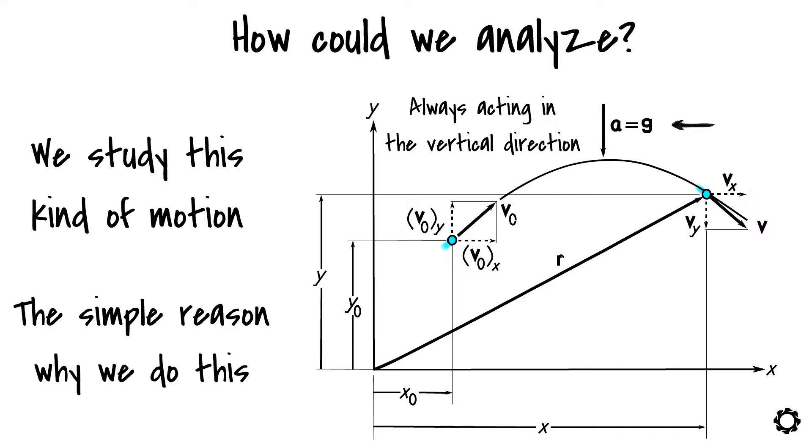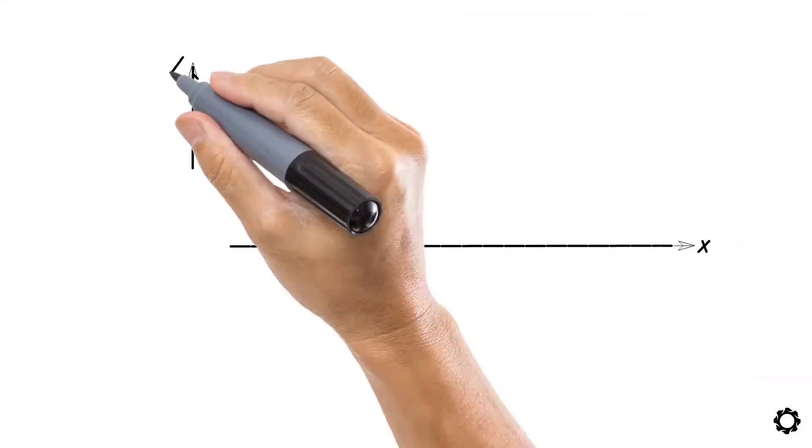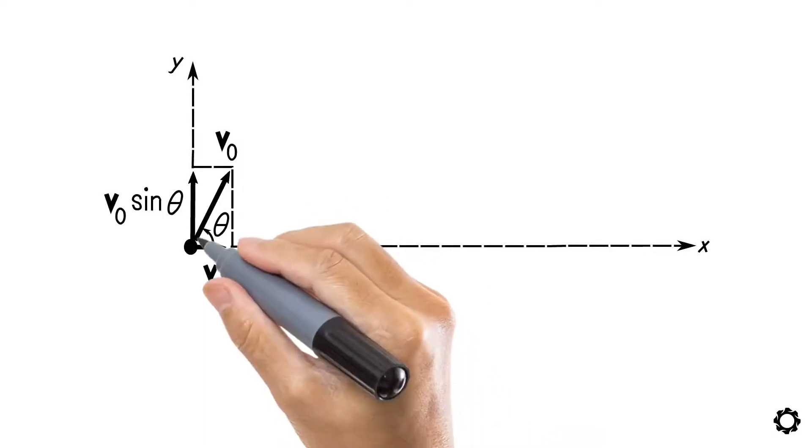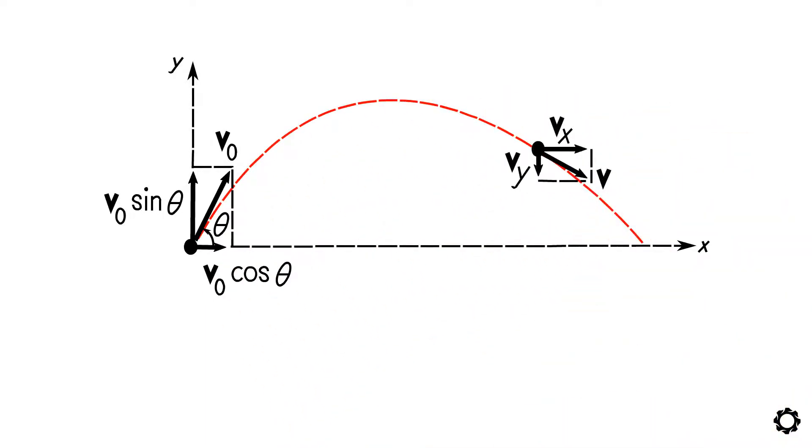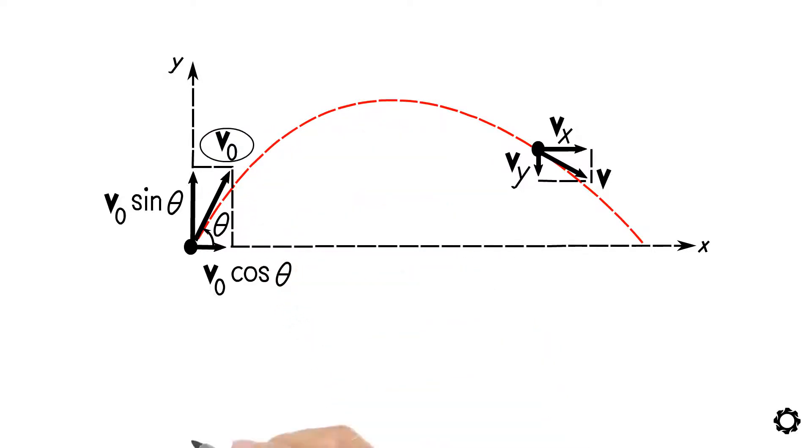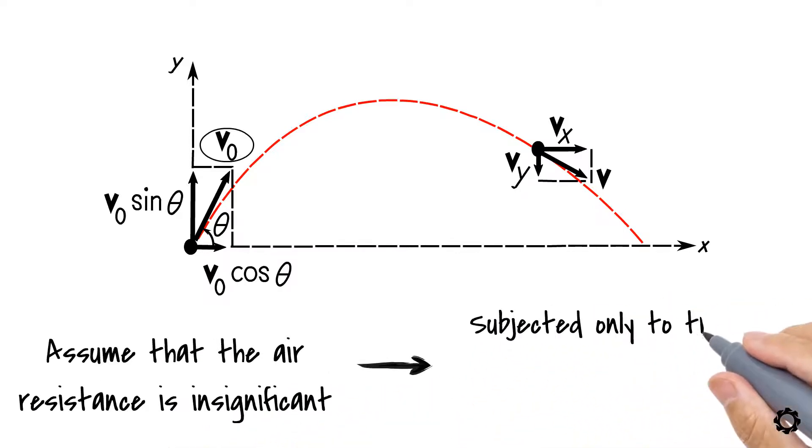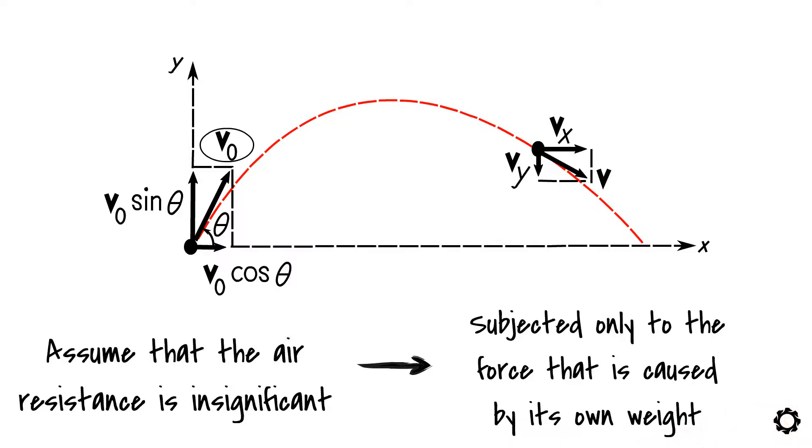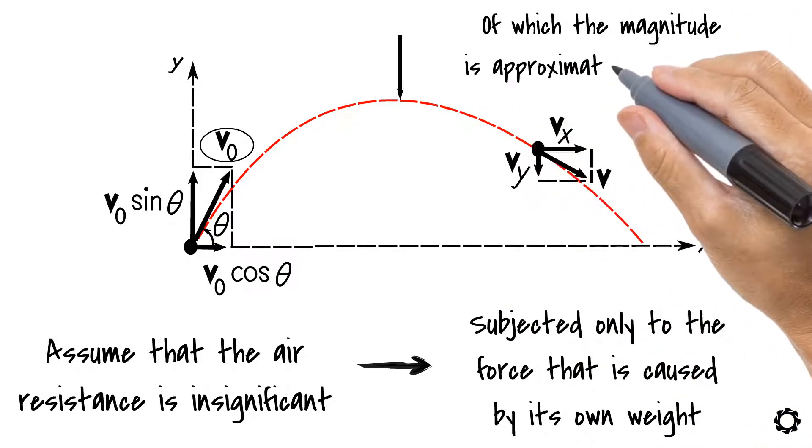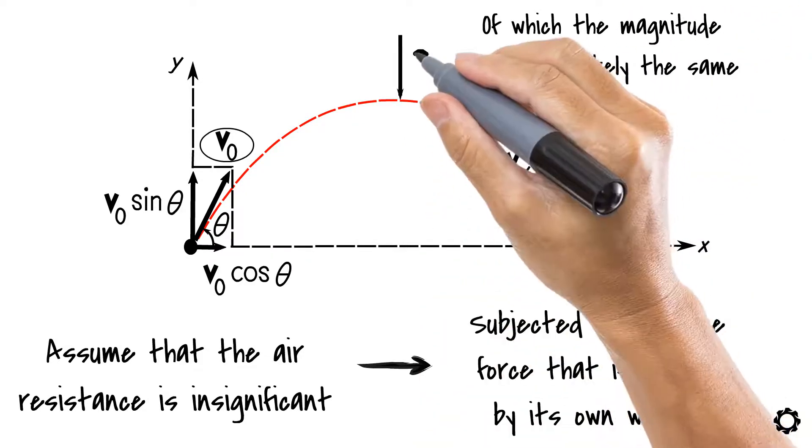Think about the following case in which we launch the cannonball with some amount of initial velocity in the xy plane. The cannonball will begin to follow a certain path which is dictated by this initial velocity v0. If we assume that the air resistance is insignificant, then our projectile will be subjected only to the force that is caused by its own weight. Thus, our projectile would also have a constant downward acceleration, of which the magnitude is approximately the same as the freefall acceleration g.